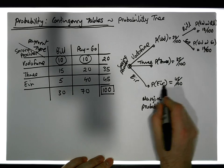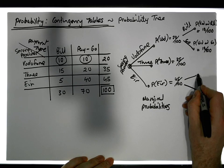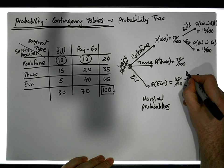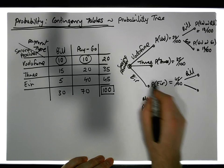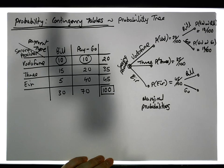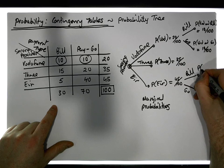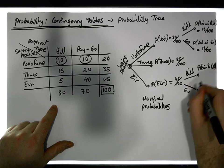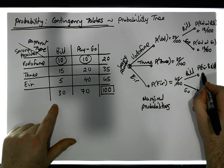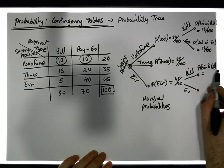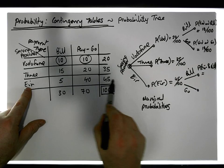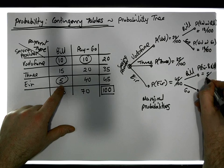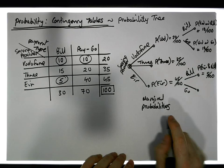Now let's look at the Eir customers. The probability that you're an Eir customer and a bill pay customer — looking at the contingency table, the Eir customers are here and the bill pay customers are here, so there are 5 Eir bill pay customers, giving us 5 chances out of 100.